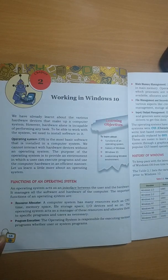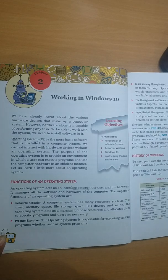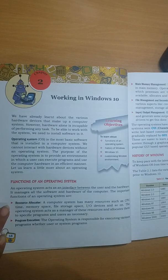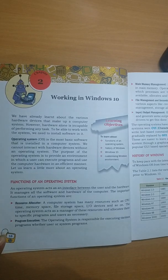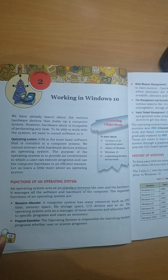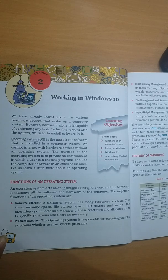The operating system performs many functions — it manages all the software and hardware of the computer. The main functions of an operating system are: resource allocation, program execution, main memory management, file management, and input/output device management.